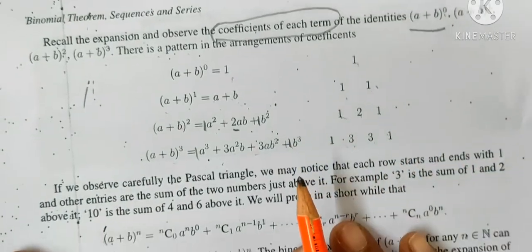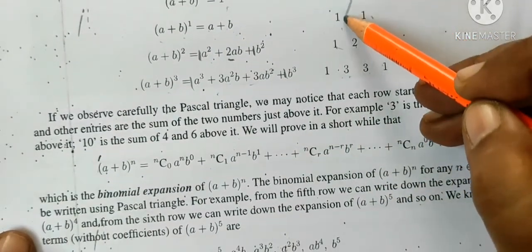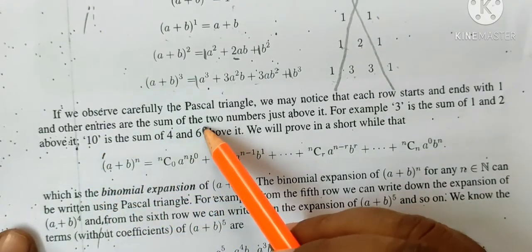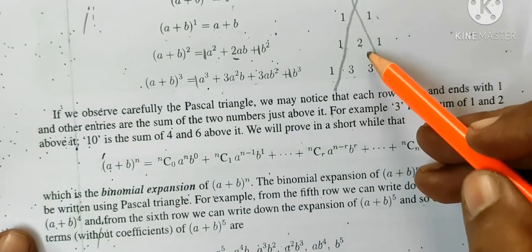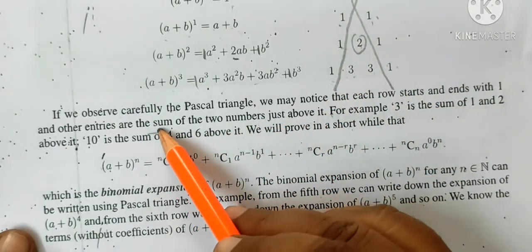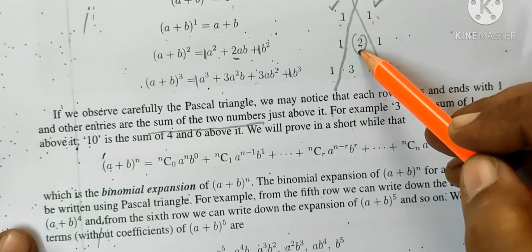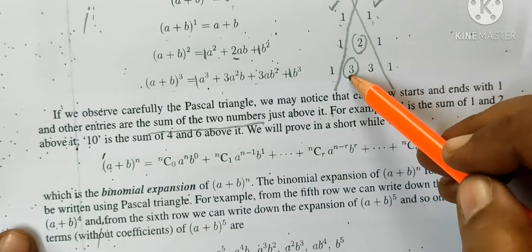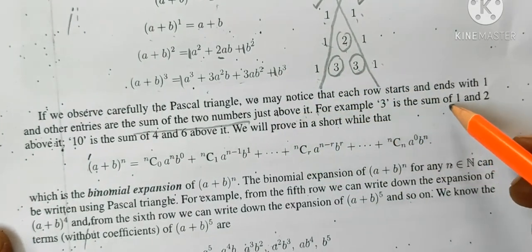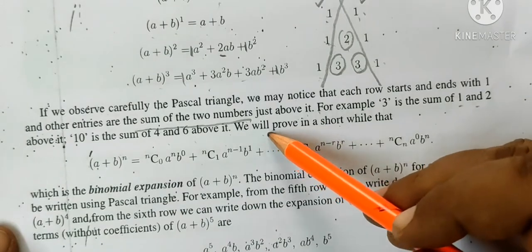We observe carefully the Pascal triangle. We may notice that each row starts and ends in 1. Start 1 and ending 1. And other entries are the sum of 2 numbers just above it. If you add 1 plus 1, it means 2. For example, 3 is the sum of 1 and 2 above it, and 10 is the sum of 4 and 6. We will prove in a short way.